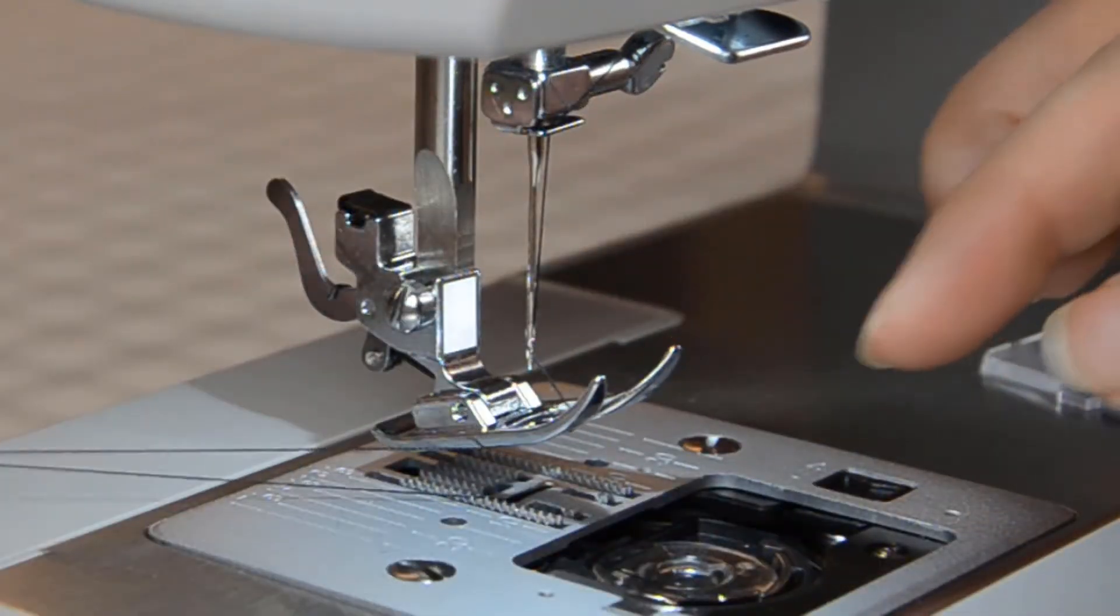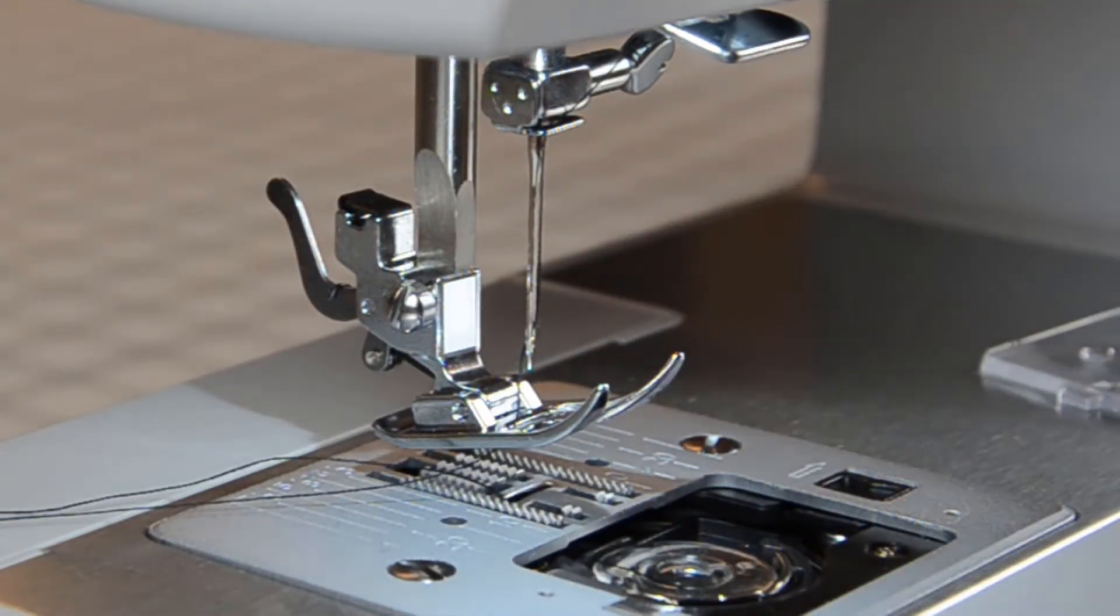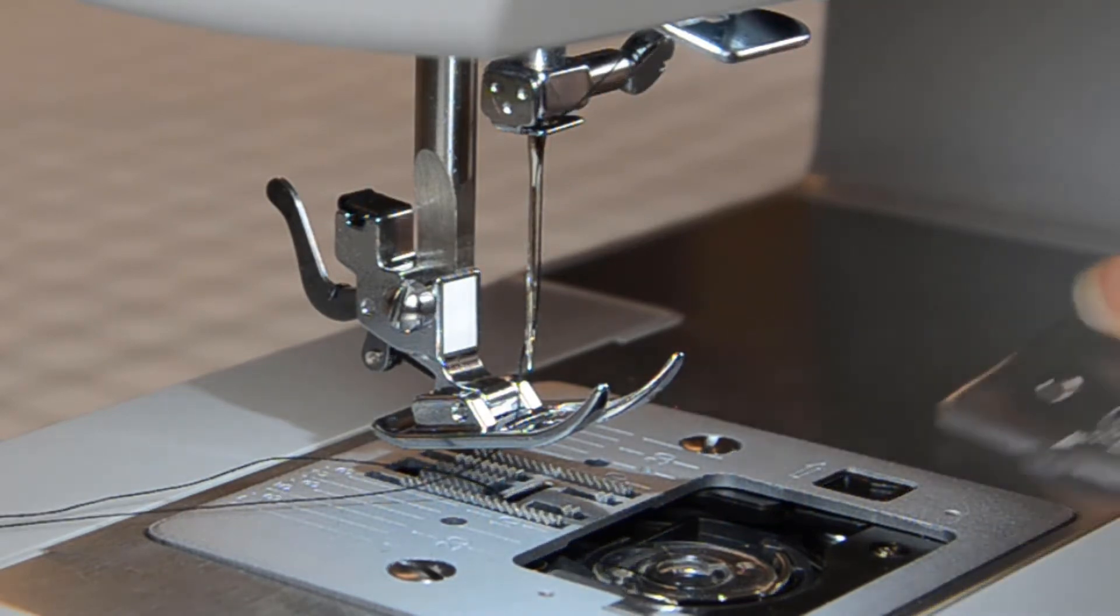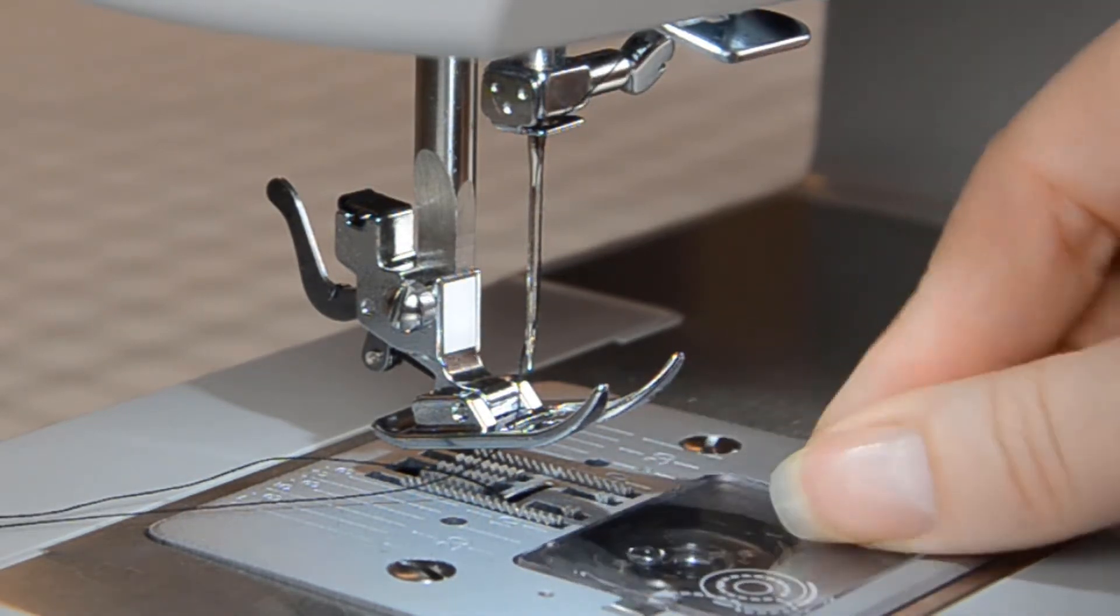Bring both threads under the presser foot. If the thread does not come up, that means your bobbin is in the bobbin holder wrong. Once you have it, replace the bobbin case cover.